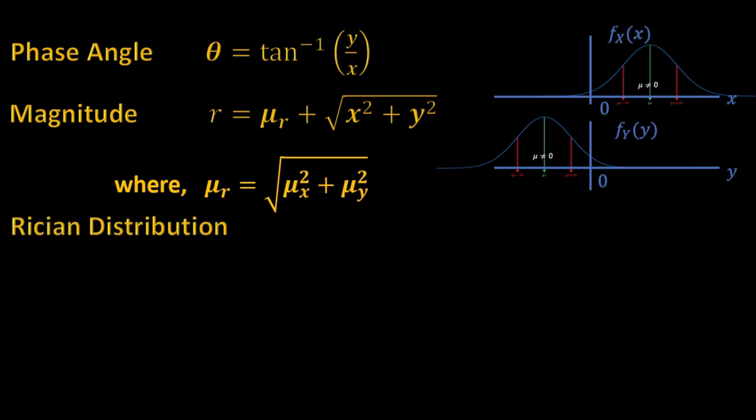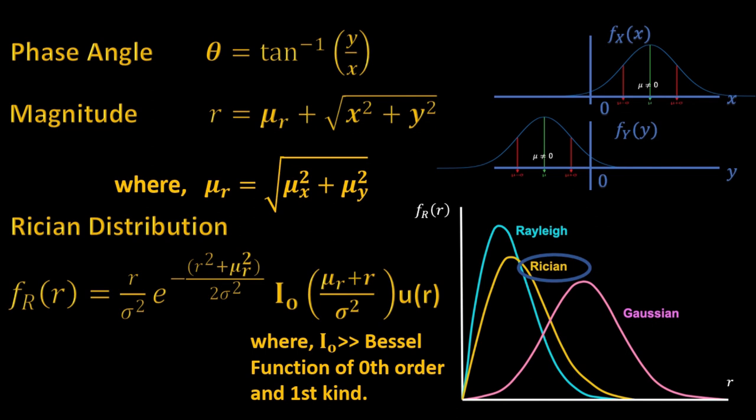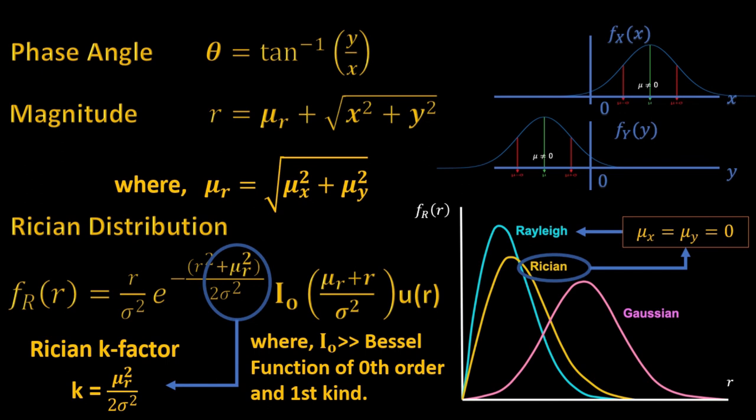Hence, the random variable r is Rician distributed with the PDF as follows. And mathematically it is given by this expression. Herein we have used I0 which is the modified Bessel function of zeroth order and first kind. Note that the Rayleigh distribution is a special case of Rician distribution where μx is equivalent to μy is equivalent to 0. Also we often define a k factor in the Rician fading which is simply μr square over 2σ square.